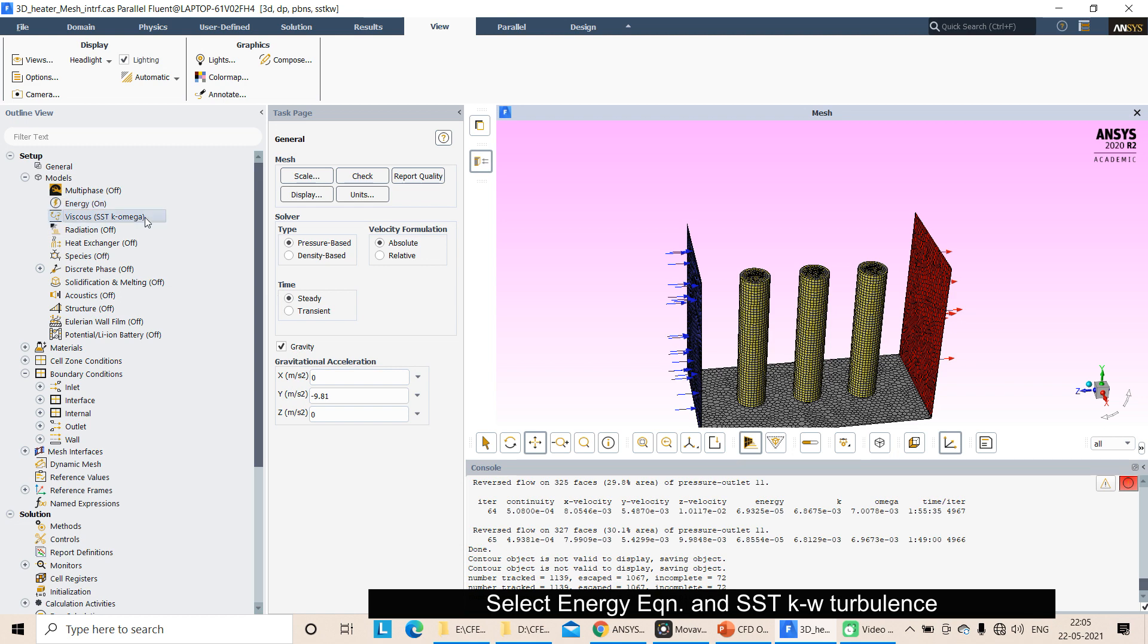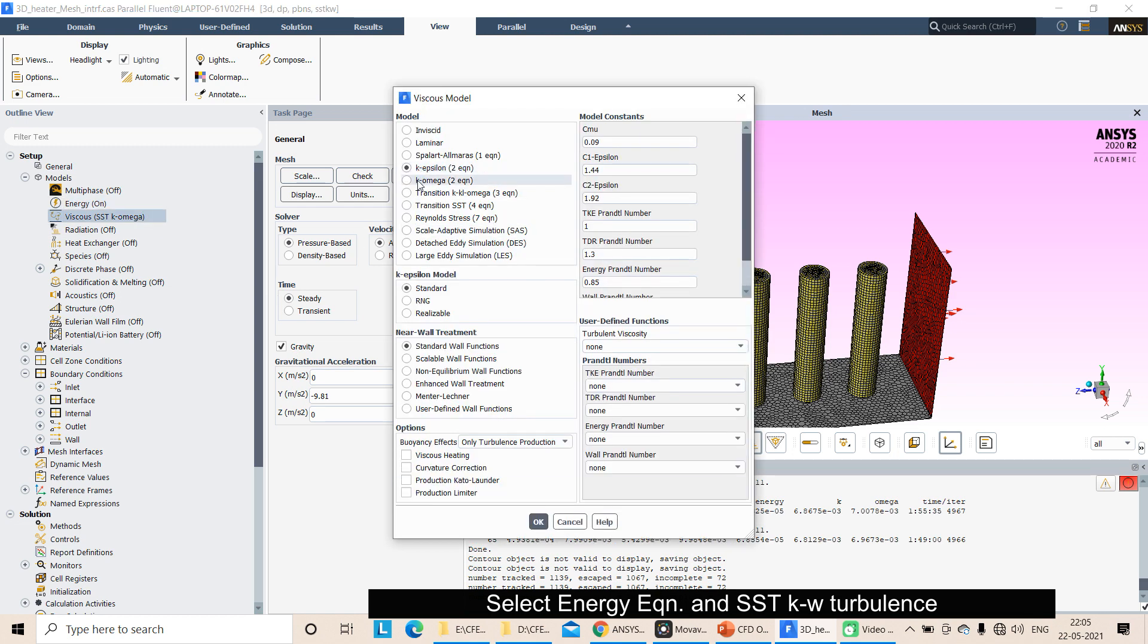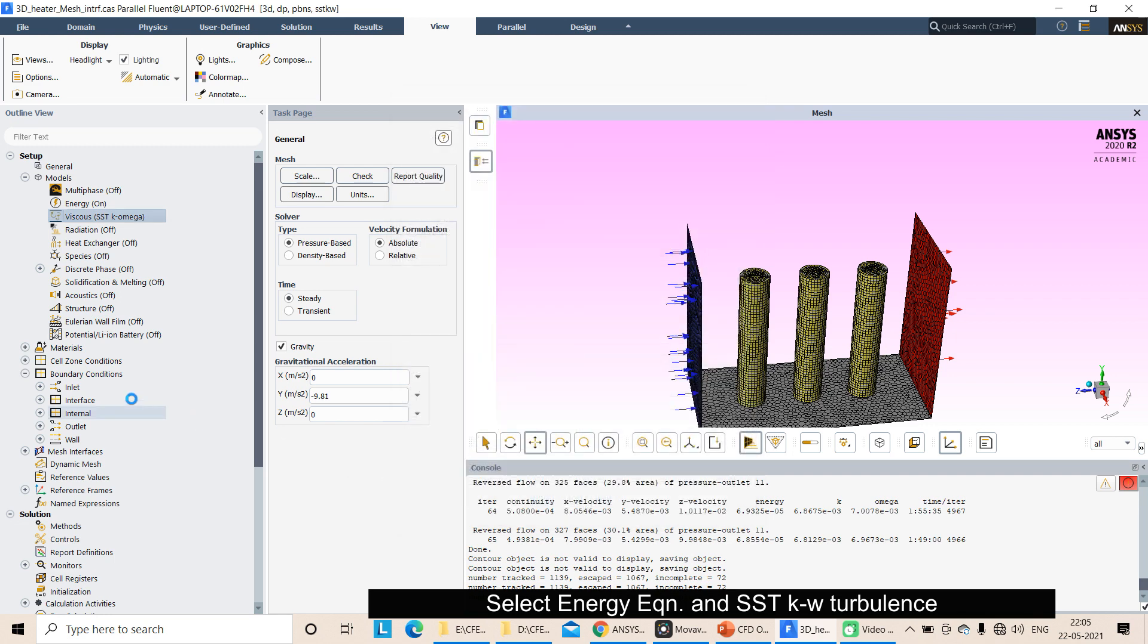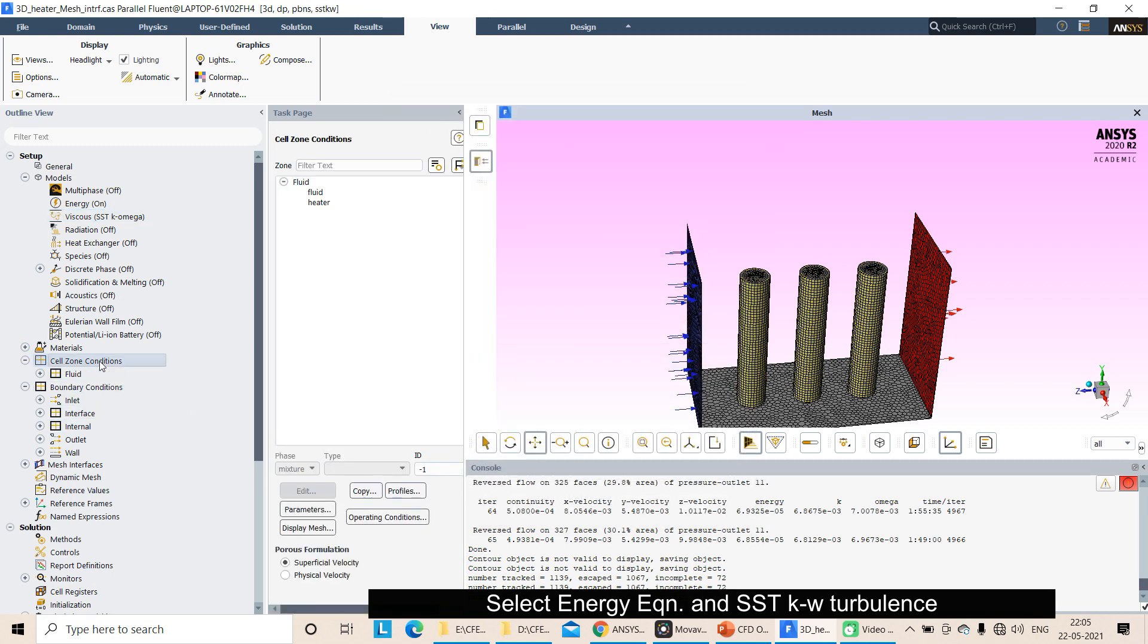In models, I am selecting the energy equation. In turbulence, I am selecting the k-omega SST turbulence model. You have to click here. Low Reynolds number correction I am not accounting for. Production limiter you can consider. Then click OK.